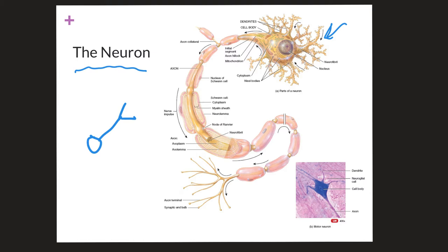When something has the ability to bind to a receptor, we call it a ligand. You can say it however you want as long as you say it with confidence. A ligand is something that when bound to a receptor allows that receptor to make a conformational, or shape, change to initiate some sort of activity in that cell. But we'll get there in a little bit.